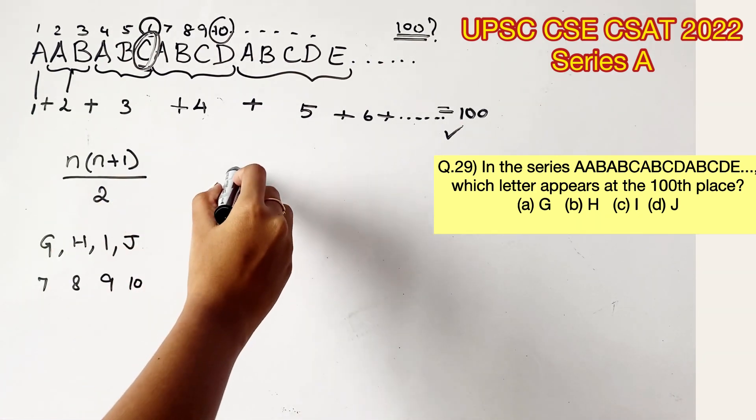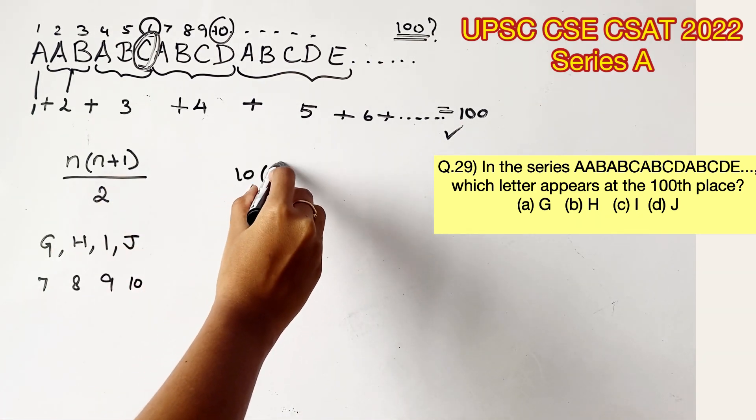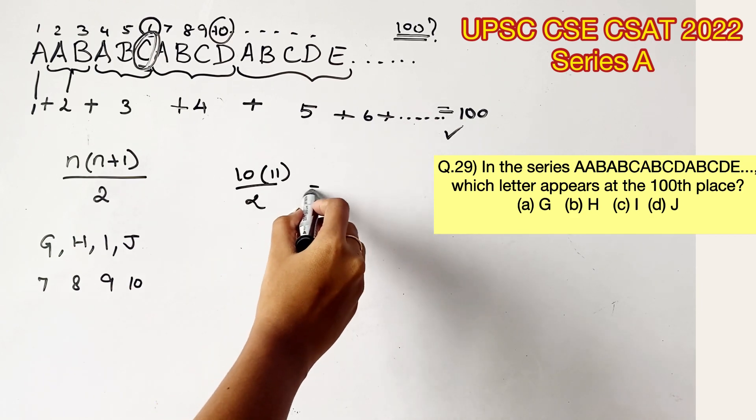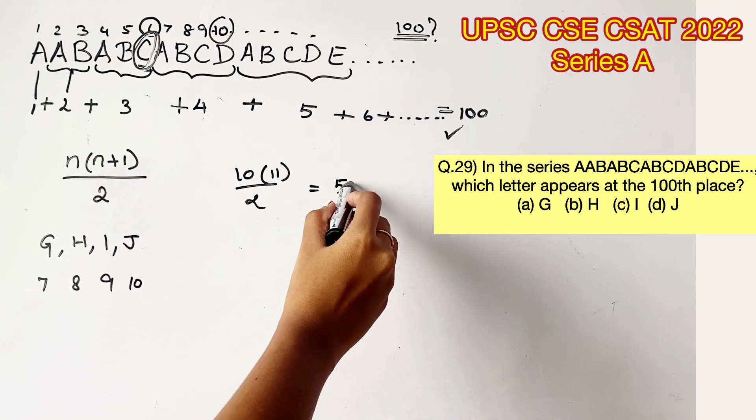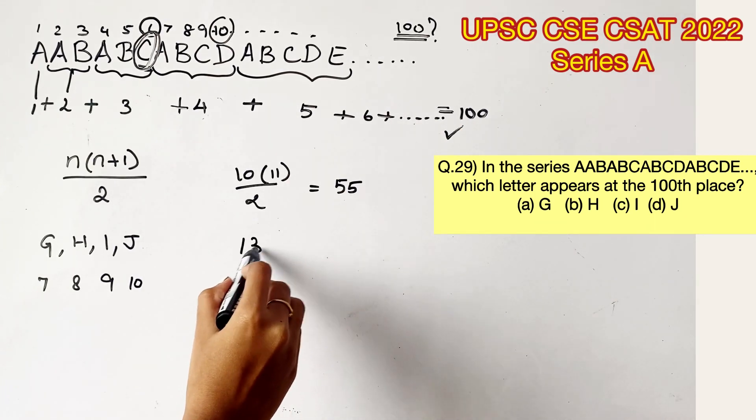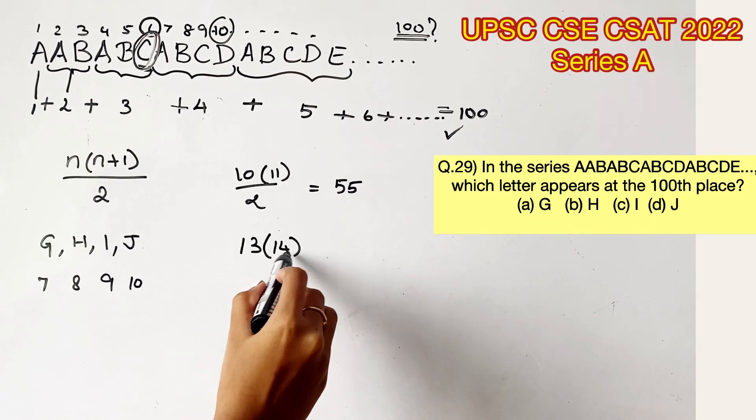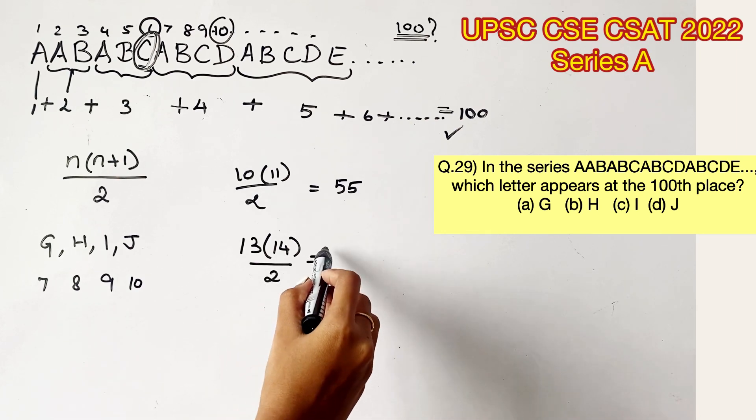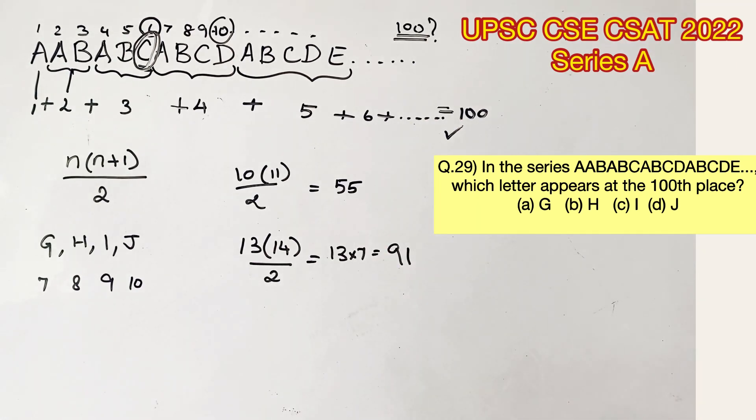Let's check for the greatest value J. Let's check for 10. Substituting n is equal to 10, we get 10 into 11 by 2, which is equal to 55, which is a lot lesser than 100, so we need to go more. Let's go for 13. 13 into 14 by 2, which is 91. So, we are pretty close to 100.